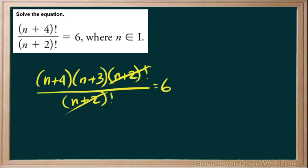On to step 2. We still have to solve this, but now we can change our way of thinking and forget about factorials for a minute and just focus on solving. So we have n plus 4, n plus 3 equals 6.